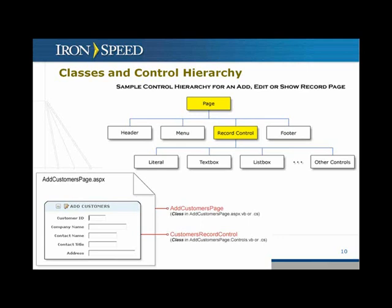We generate two classes designated in yellow here. One is called the page class — this is the code-behind class if you're familiar with .NET development. The other is called the record control class. These two classes allow you to easily customize the underlying code we generate. The add customers page corresponds to the page class, while the customer record corresponds to the record control class. We also generate controls like the header, footer, menu, and for the customer name field, a text box — and so on.